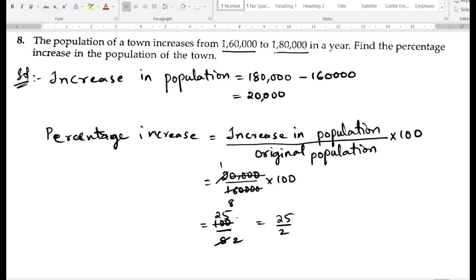So let us divide this 25 divided by 2. 2 times 12 is 24, we will get one remainder. So the percentage is 12 and a half.